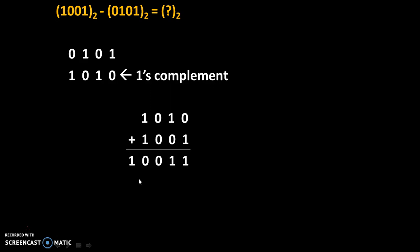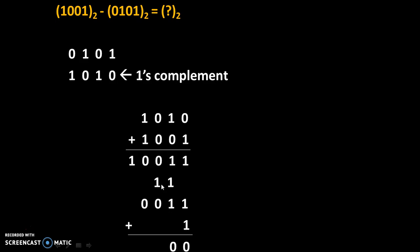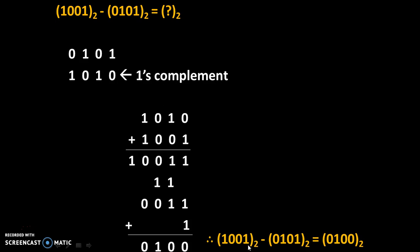We will apply Rule No. 3: if carry is generated, we will add that carry to the answer. Our answer is 0011 with carry 1, so we will add that carry to our actual answer. We get 1 plus 1 is 0 with carry 1, 1 plus 1 is 0 with carry 1, 1 plus 0 is 1, and 0 as it is. Therefore, 1001₂ minus 0101₂ equals 0100₂.